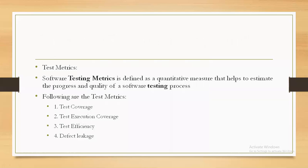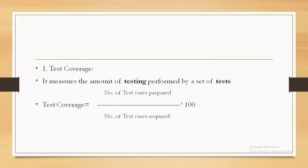Next we have test metrics. Software testing metrics is defined as a quantitative measure that helps to estimate the progress and quality of the software testing process. There are four types of test metrics: test coverage, test execution coverage, test efficiency, and defect leakage. Test coverage measures the amount of testing performed by a set of tests. It is calculated as: test coverage = (number of test cases prepared / number of test cases required) × 100.